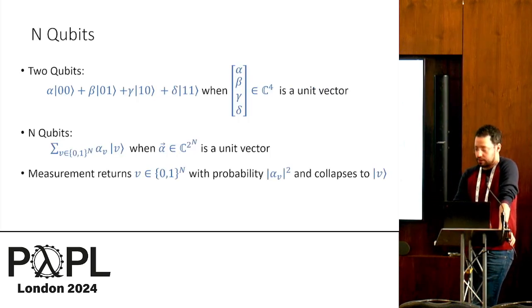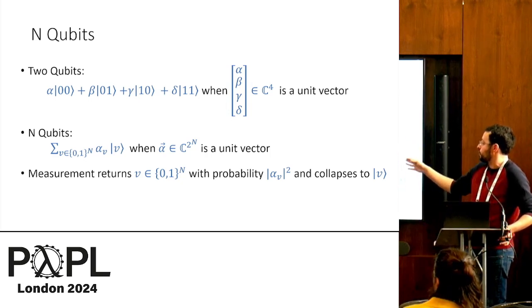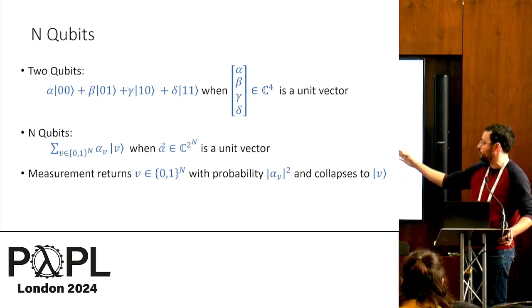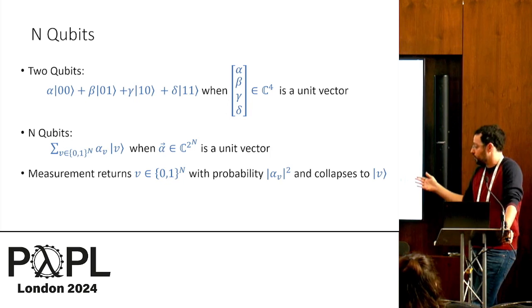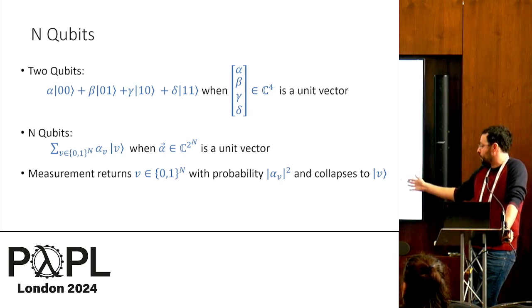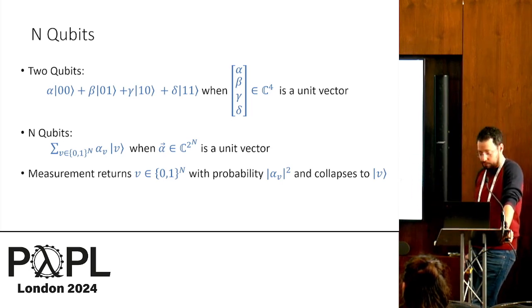Now if I have two qubits, then the state would be a vector in a four-dimensional complex space for all the combinations, 0,0, 0,1, and so on. And if we have n qubits, it's going to be 2 to the n. That's going to be the dimensionality of our state vectors. And again, when we measure, we get, with these probabilities, the amplitudes of the complex number give us the probabilities, and we collapse the state.